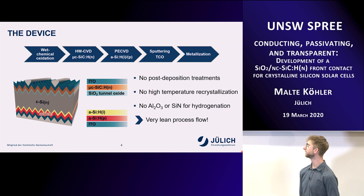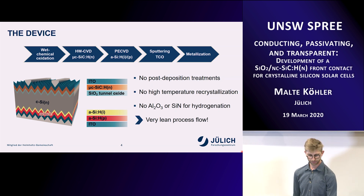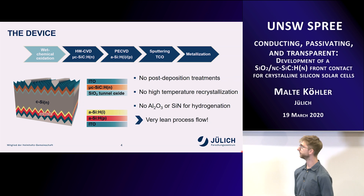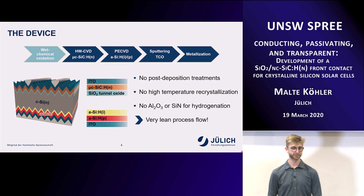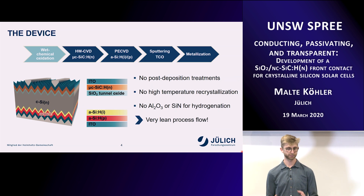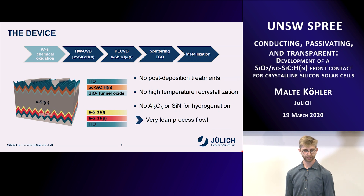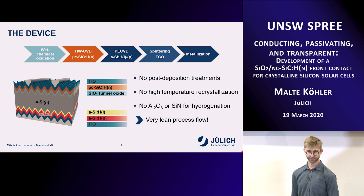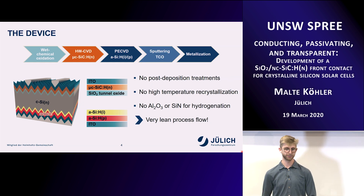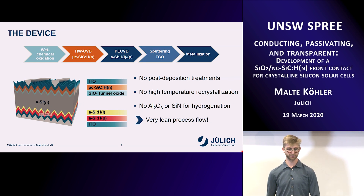This slide gives a small outline of the talk. In the first few minutes I want to talk about wet chemical oxidation, because this is the first critical step for this contact to work. Then hot wire CVD and the development of silicon carbide, and then sputtering of TCO, since we found that this is also very critical to our contact.